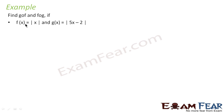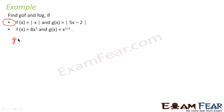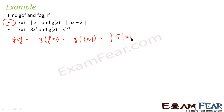In this example we have to find g∘f and f∘g. Given f(x)=|x| and g(x)=5x−2. For the first part, g∘f is nothing but g(f(x)), which equals g(|x|), which equals 5|x|−2. That is my answer.